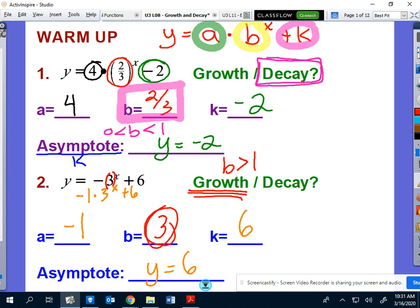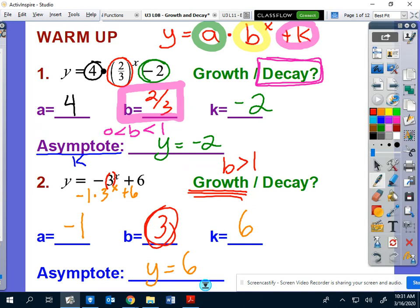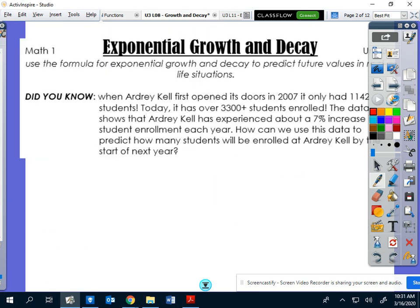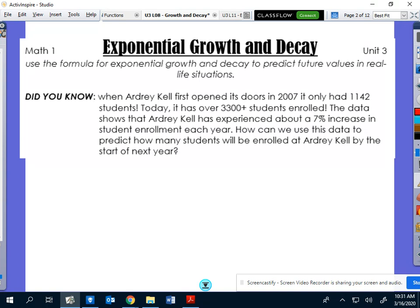Hopefully that kind of reminds you of what's coming back from our last day of class. Now, the next component is to actually get a jump on some word problems. And this is going to be really cool, because here's a first little intro for you. If you didn't know it, when Ardrey Kell first opened back in 2007, we only had 1,142 students. But today we have over 3,300. So the question then says, what's actually going on here? We actually have about a 7% increase, a 7% increase in students every year.